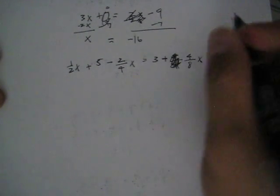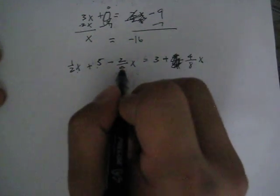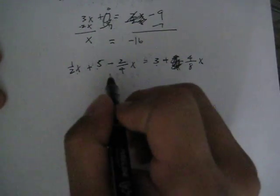Now what do we have? We have a variable, a number, a variable, a number, a variable. Let's just solve this out.